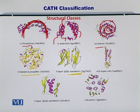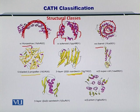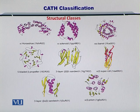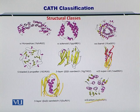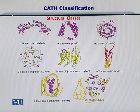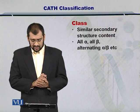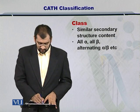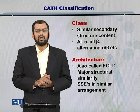Next is the sandwich, where lots of beta sheets come together, overlay each other, and form a sandwich. Then there is the alpha over beta super roll, with alpha helices followed by separate beta sheets. Next is the beta-alpha-beta sandwich, with beta sheets on both sides and alpha helices in the middle. Lastly, the alpha over beta prism has the entire structure organized like a prism, with alpha helices going down and linked by beta sheets. These are the various structural classes, similar in secondary structural content — all alpha, all beta, alpha over beta, alpha plus beta.